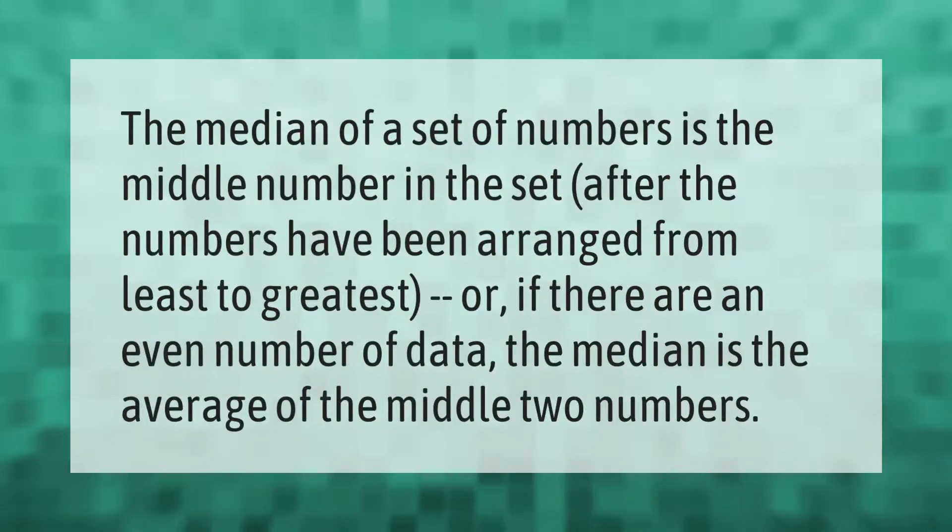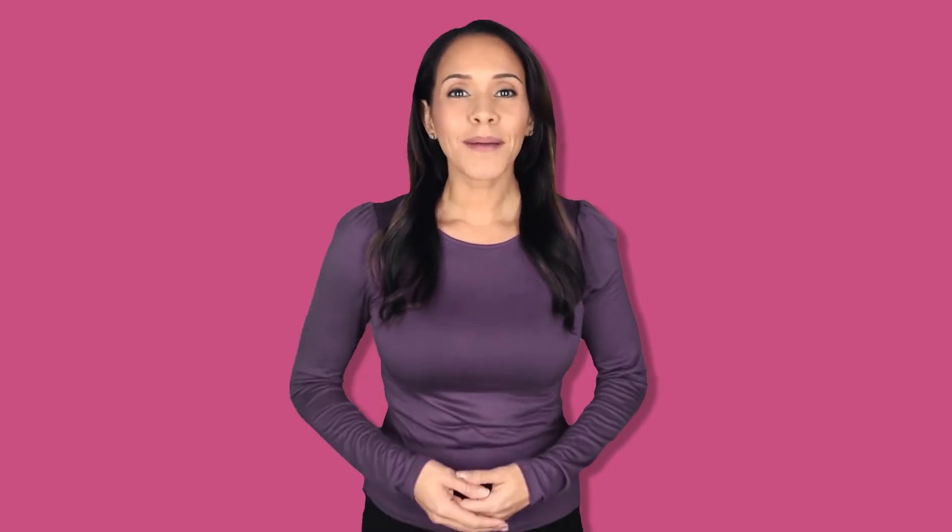The median of a set of numbers is the middle number in the set after the numbers have been arranged from least to greatest. Or, if there are an even number of data, the median is the average of the middle two numbers.